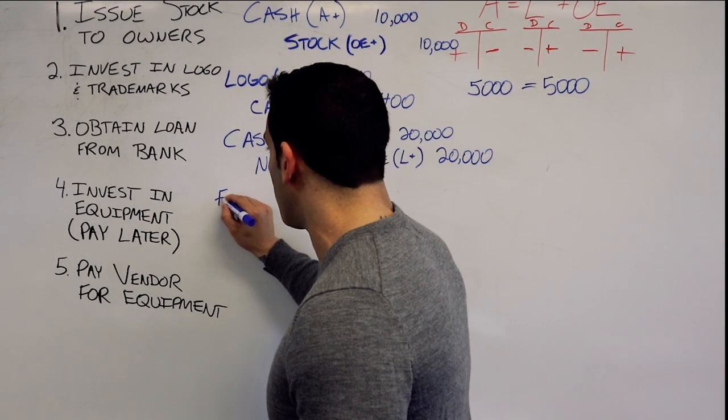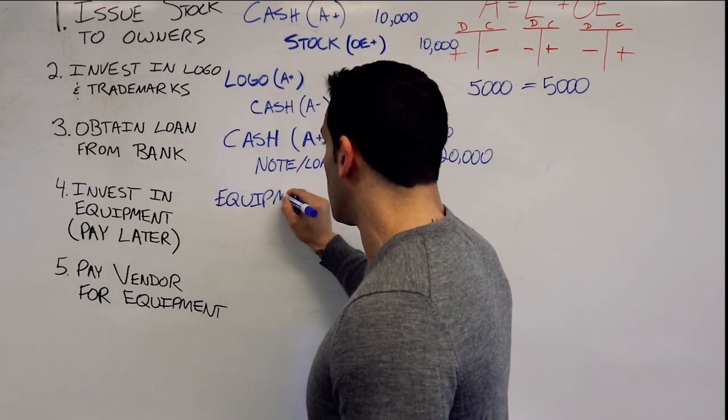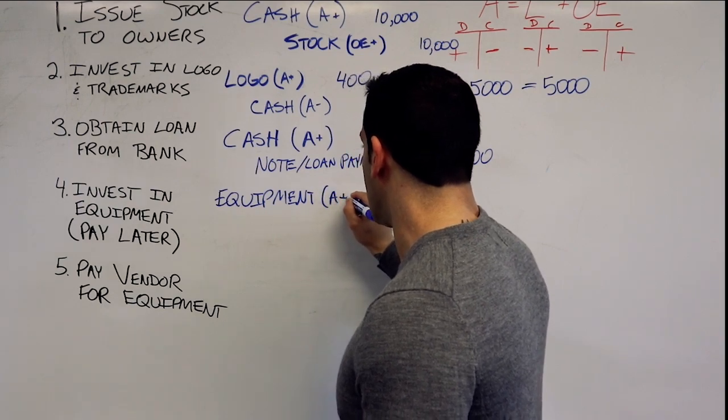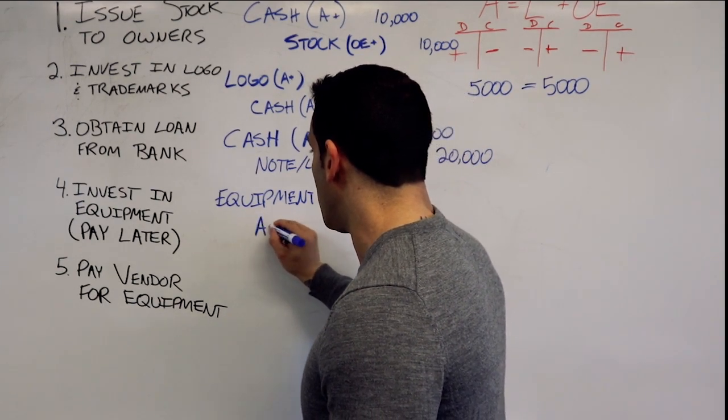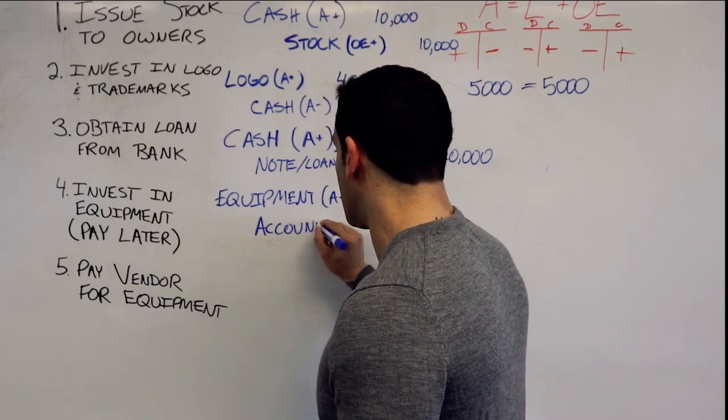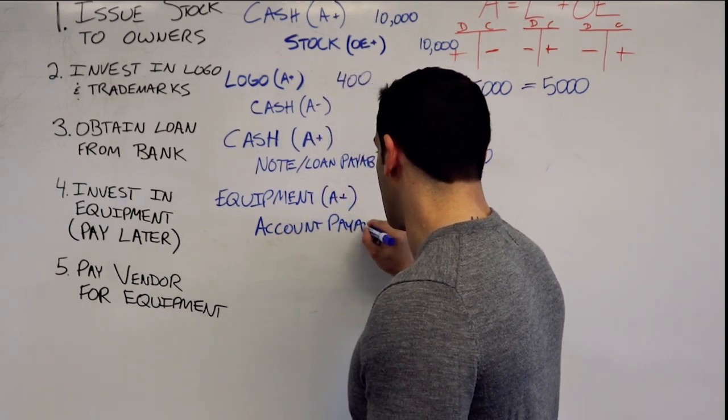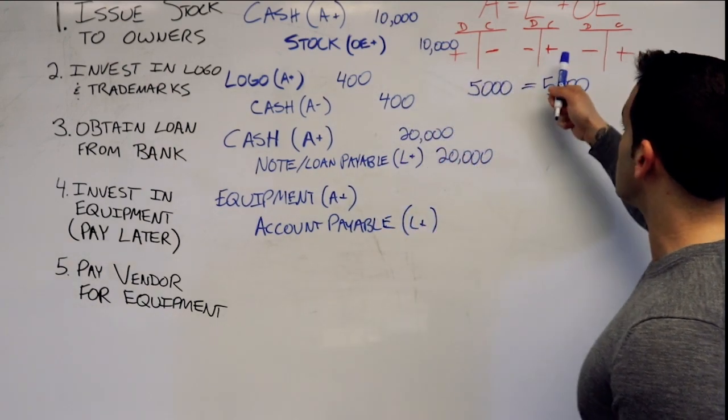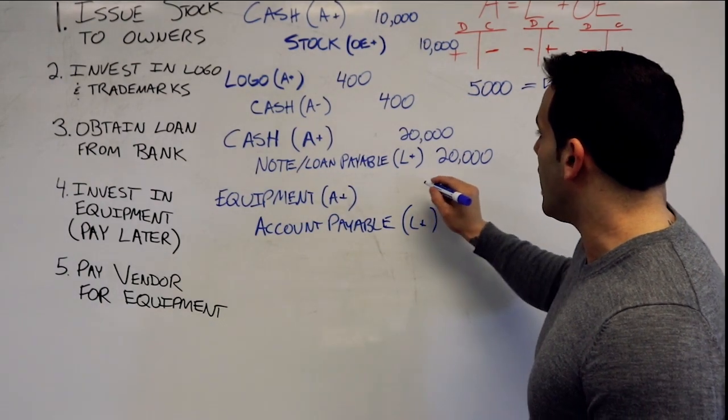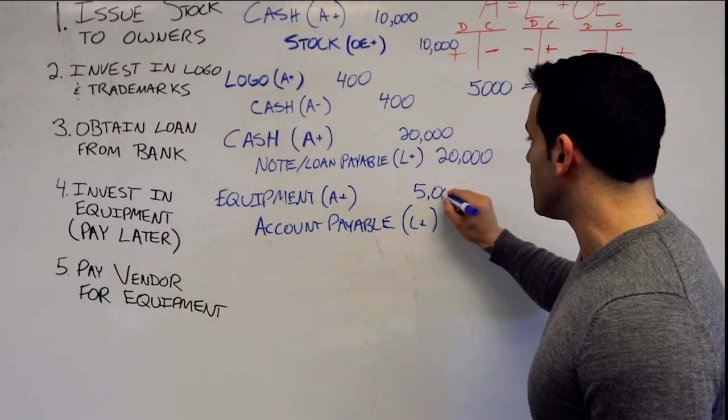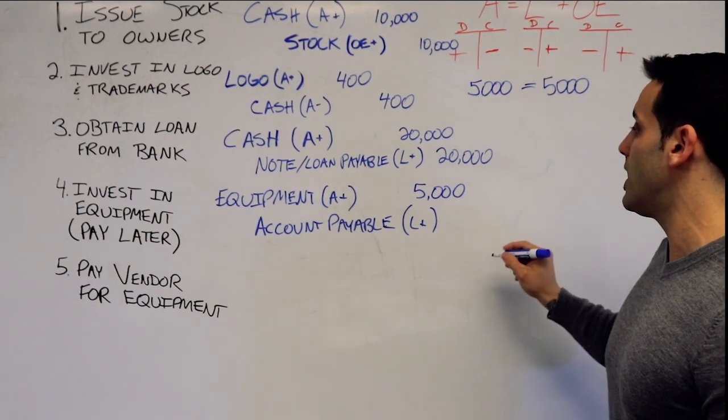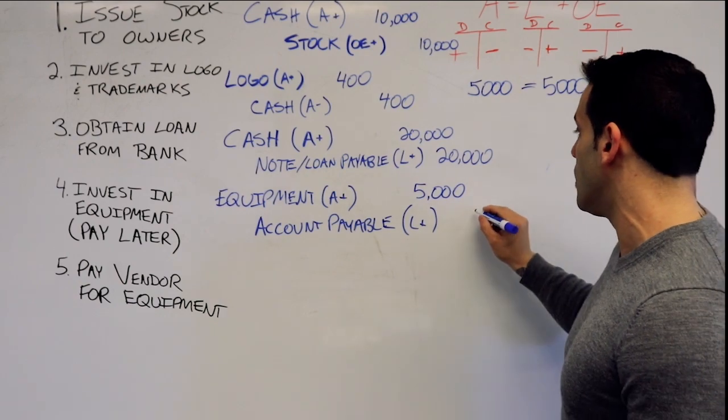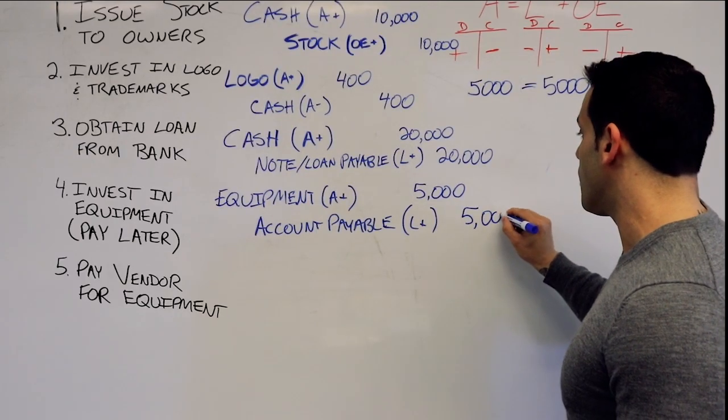We have our equipment. We are debiting for $5,000 and accounts payable, we are crediting for $5,000.